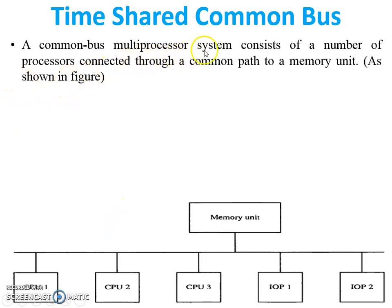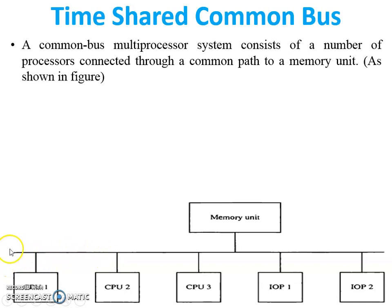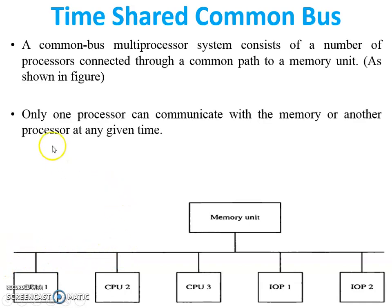A Common Bus multi-processor system consists of a number of processors connected through a common path to a memory unit, as shown in the figure. In the diagram, this is the memory unit — there are five different processors connected to the memory unit with a single path, or we can say a single bus. Only one processor can communicate with the memory or another processor at any given time. It means CPU 1 accesses the bus, and at that time the remaining CPUs are in waiting mode for the availability of the bus.